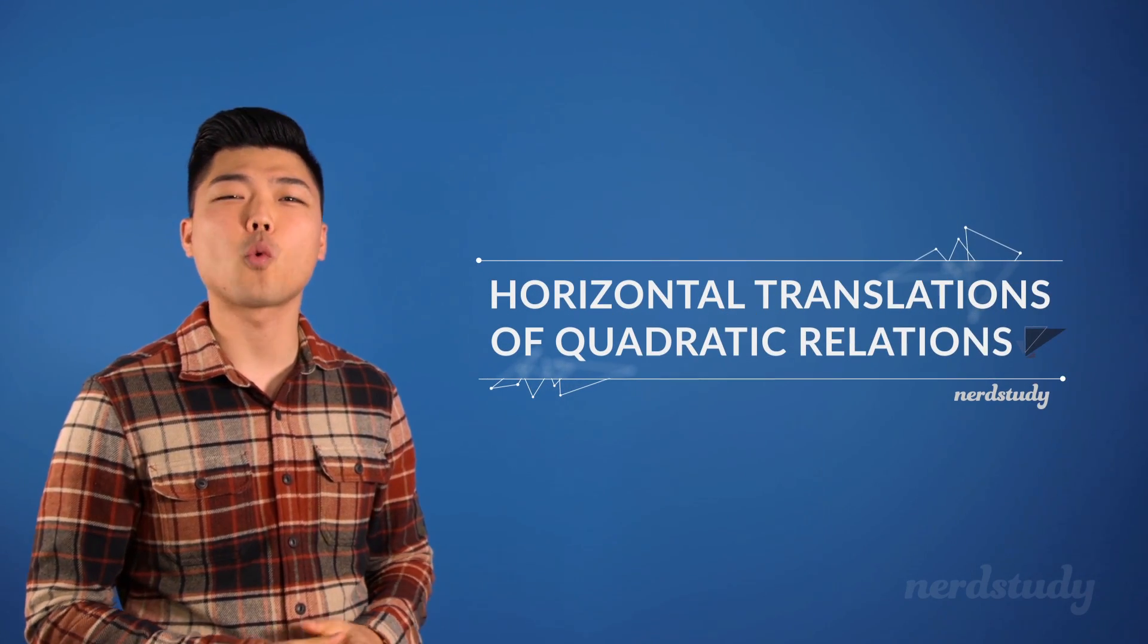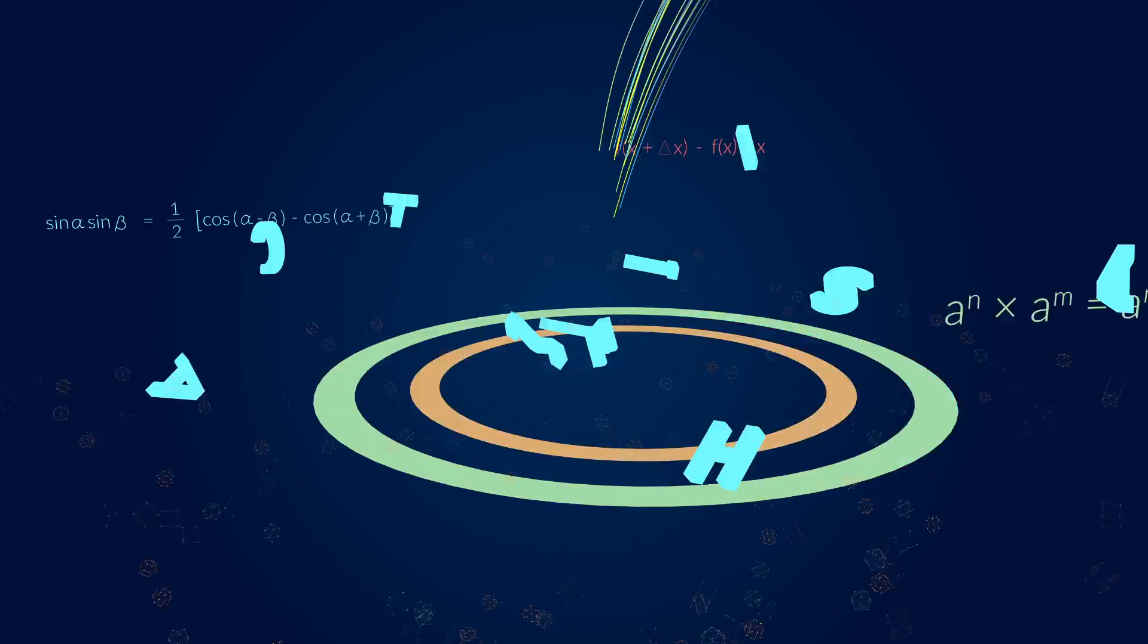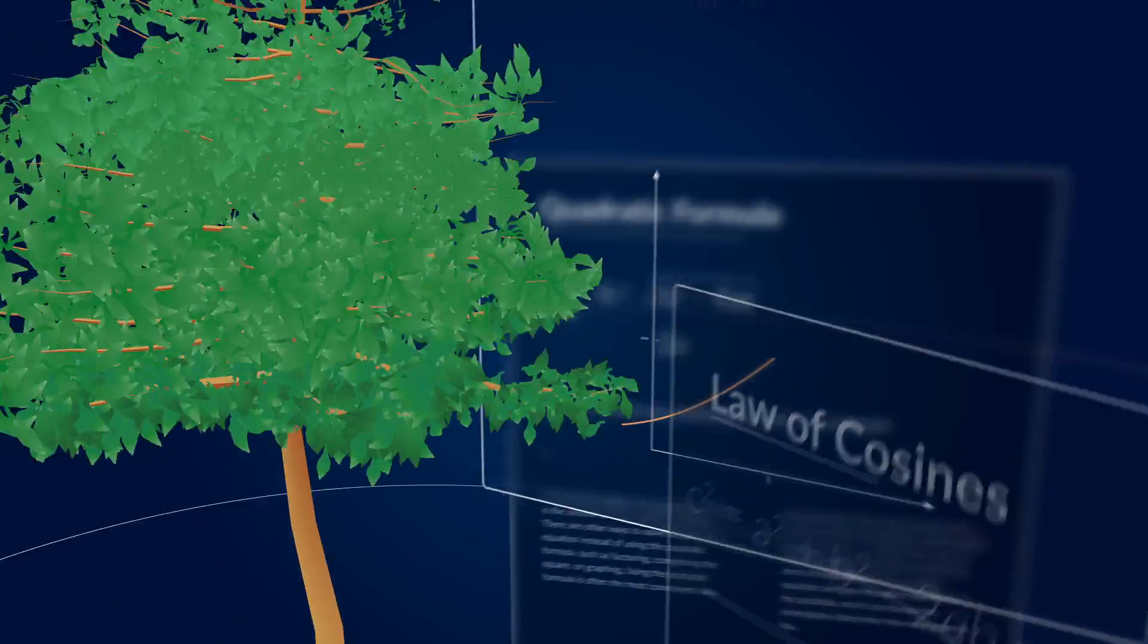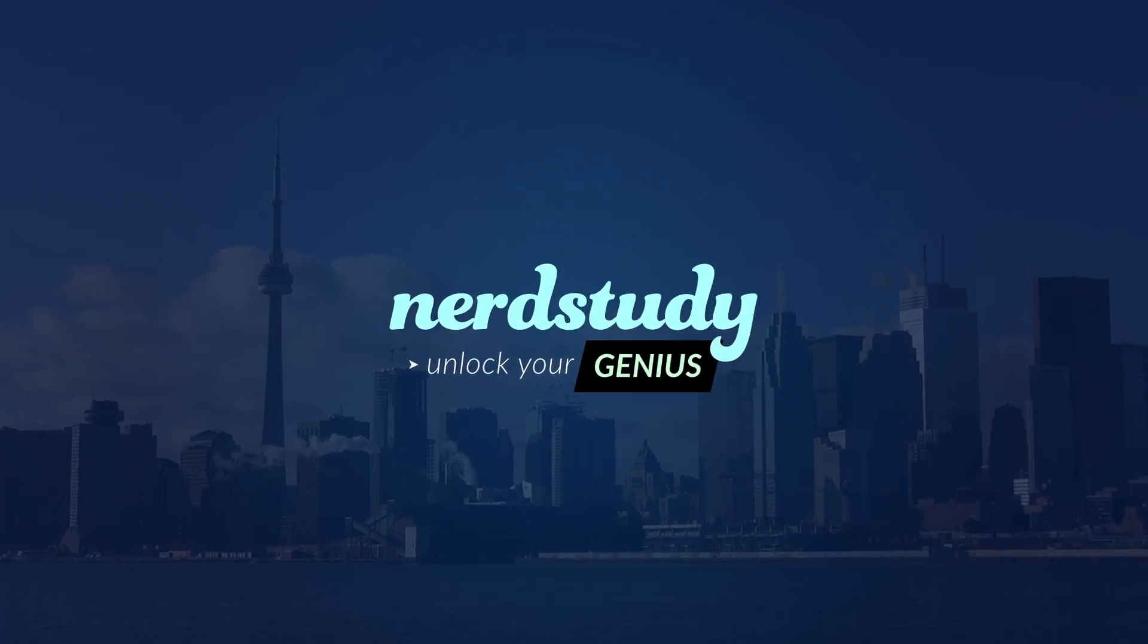Today we are learning about horizontal translations of quadratic relations. Let's start off with our standard quadratic equation y equals x squared and its graph.